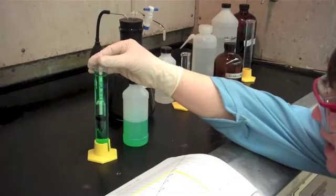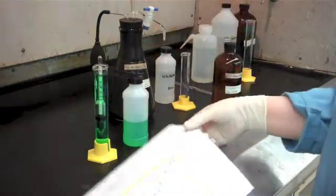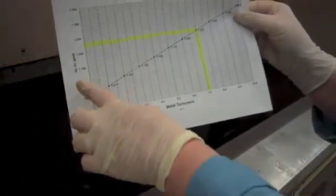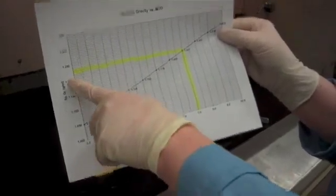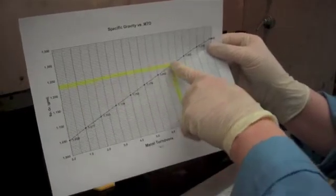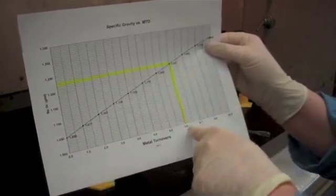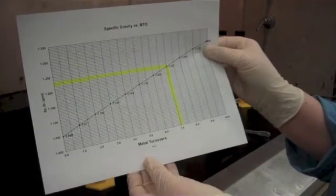For this bath, I'm reading 1.230 grams per milliliter. We have a graph comparing specific gravity to metal turnovers. And I've highlighted 1.230, follow the graph over to our line and down. This bath is at approximately 7 metal turnovers.